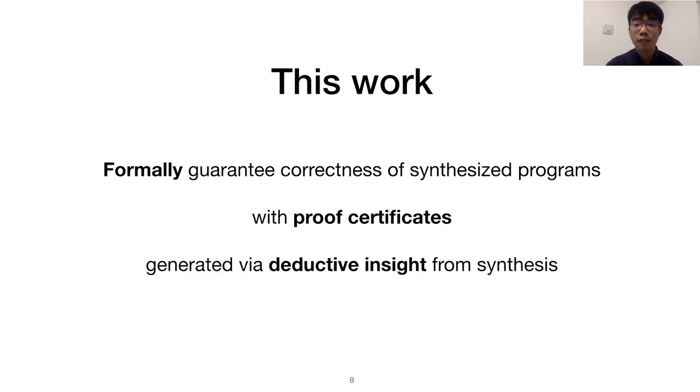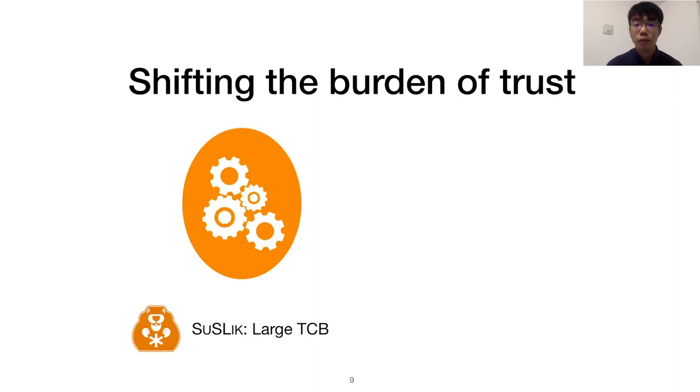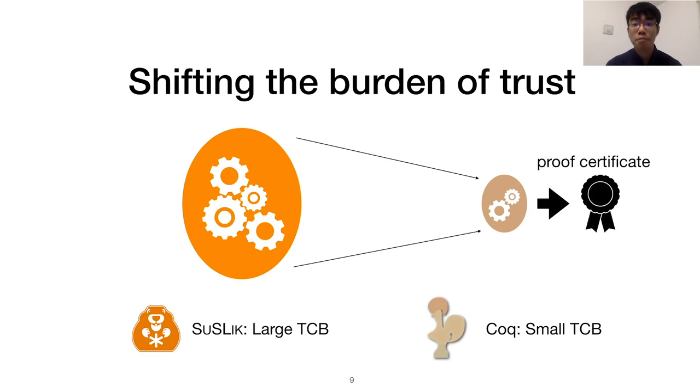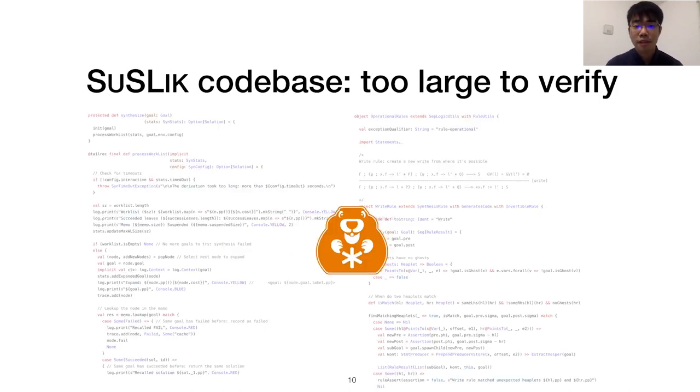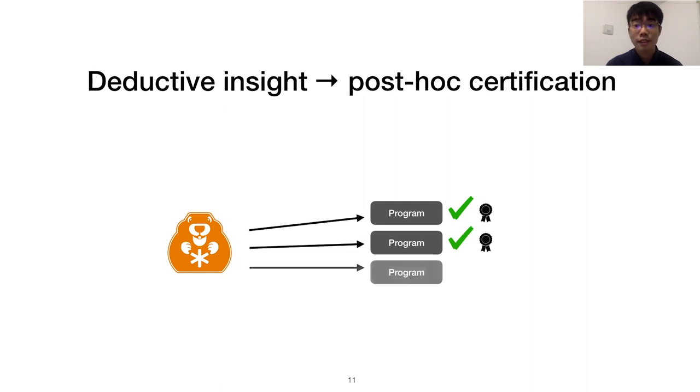The technique consists of generating these certificates using the deductive insight gained from synthesis. Let's return to this issue of trust. Our earlier misgivings arose because Syslic has a large trusted code base, or TCB. Ideally, we'd like to offload the burden of trust to something with a more minimal TCB, like the Coq proof assistant. Coq proof certificates are widely treated as a correctness guarantee for important theorems and programs. Syslic's code base is quite large, so it's impractical to verify its entirety in Coq. But luckily enough, Syslic's deductive approach to synthesis makes it suitable for post hoc certification, where we generate proof certificates for each synthesized program.